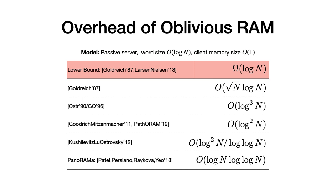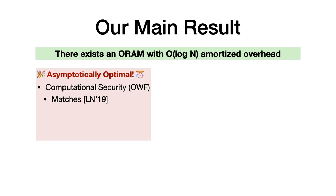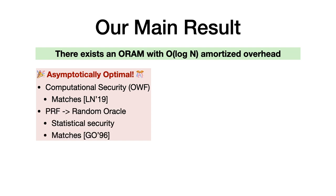In our work, we present the first ORAM construction that achieves overhead of log n, matching the lower bound. Our main result is an ORAM construction with log n amortized overhead. This is asymptotically optimal. The construction achieves computational security and matches the lower bound of Larsen and Nielsen. When we replace the one-way function with a random oracle, we also achieve statistical security, matching the lower bound of Goldreich and Ostrovsky.